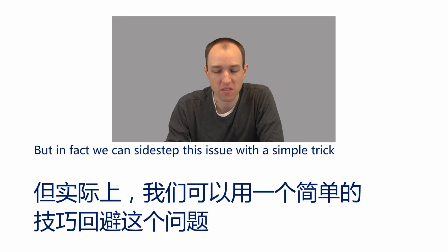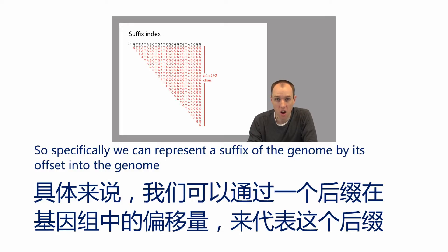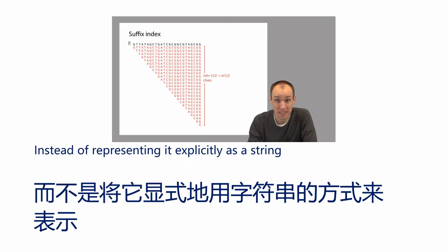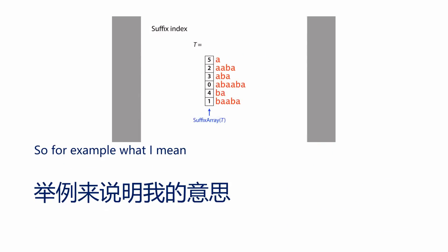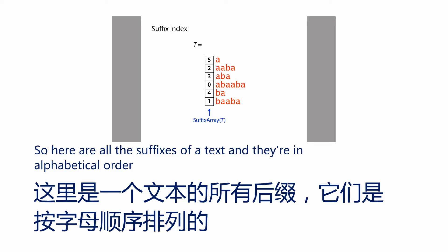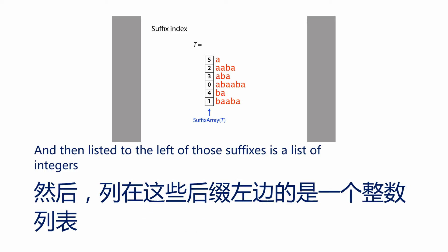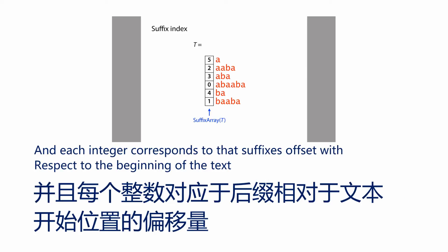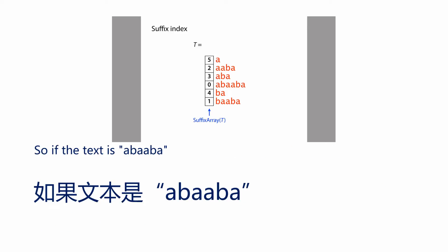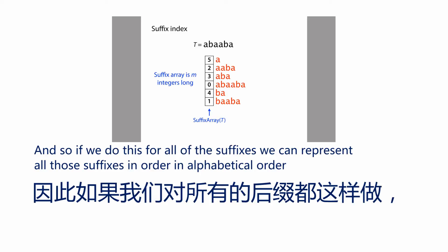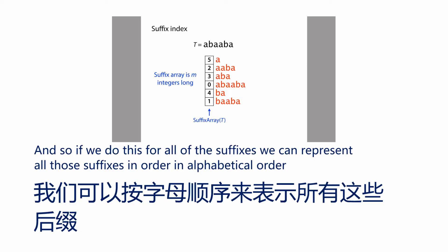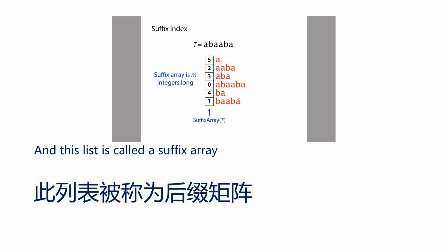We can sidestep this issue with a simple trick. Specifically, we can represent a suffix of the genome by its offset into the genome — instead of representing it explicitly as a string, we represent it as just one integer that tells us the offset with respect to the beginning of the genome. Here are all the suffixes of a text in alphabetical order, and listed to the left is a list of integers. Each integer corresponds to that suffix's offset with respect to the beginning of the text. For example, if the text is 'abaaba', the first suffix alphabetically — consisting just of the character 'a' — is at offset 5. We can represent all those suffixes in alphabetical order with just a list of integers, and this list is called a suffix array.